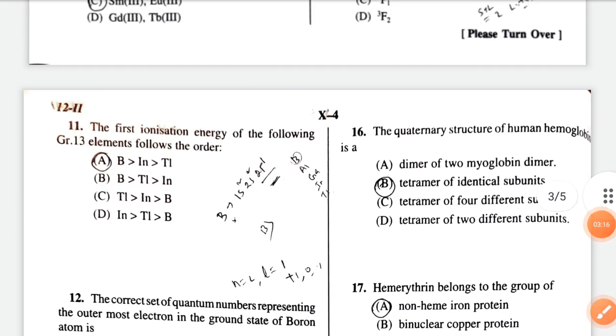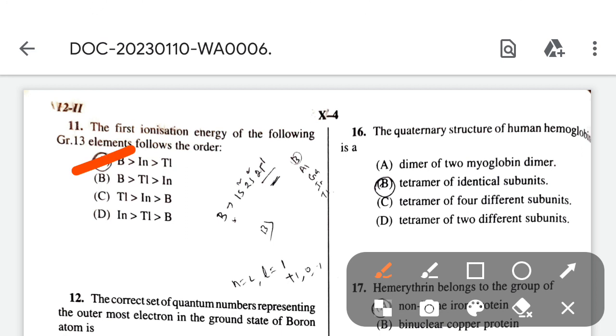Question 11: the first ionization energy of the following group 13 elements follows the order - the correct option is option A.